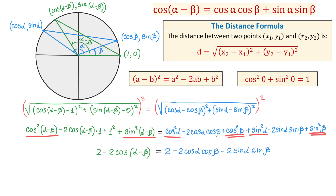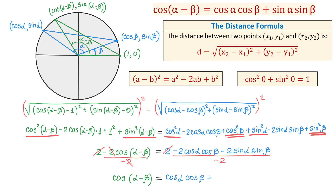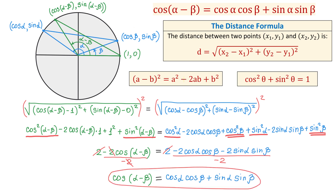Now, if we subtract 2 from both sides, the 2 will cancel. And if we divide both sides by negative 2, on the left side negative 2 and negative 2 will cancel, giving us cosine of alpha minus beta. When we divide the right side by negative 2, we get cosine of alpha cosine of beta plus sine of alpha sine of beta. And we have just proved that cosine of alpha minus beta equals cosine of alpha times cosine of beta plus sine of alpha times sine of beta.